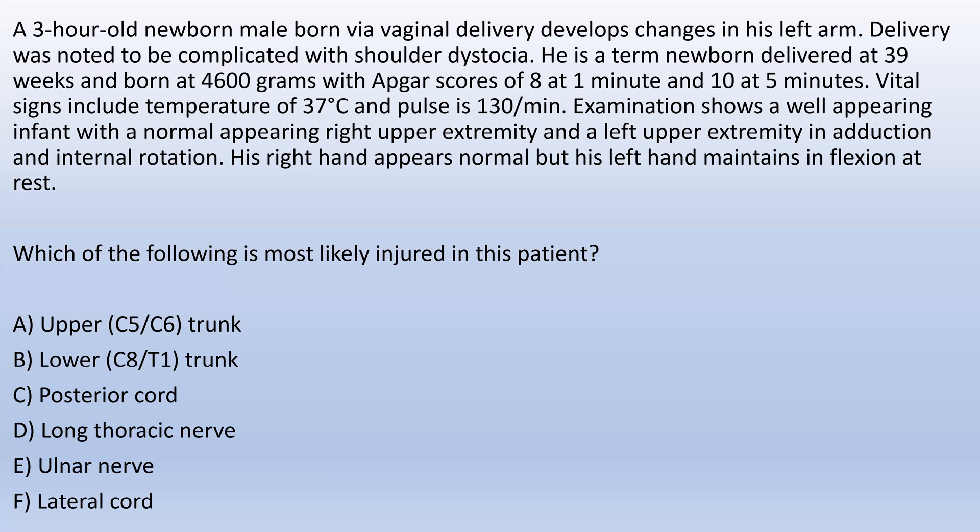We'll go ahead and cross through the wrong answers and talk about why each is wrong, then conclude with a review of the brachial plexus. Right off the bat, we know this is a shoulder dystocia situation, and we know that both A and B — upper and lower trunk lesions — are common in shoulder dystocia. So you'd be suspicious that A and B may be what you're looking for, but we can work through all the other answers at the same time.